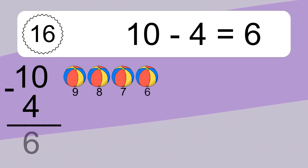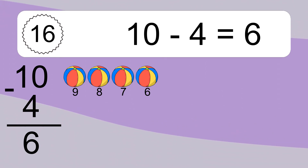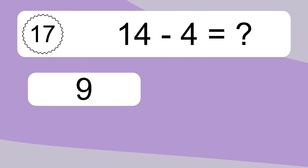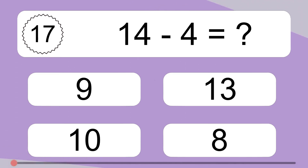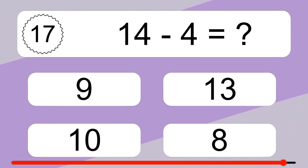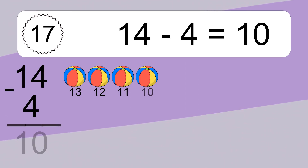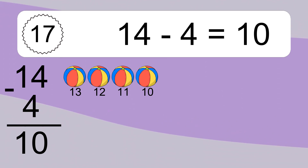10 minus 4 equals what? 10 minus 4 equals 6. Let's count it: 9, 8, 7, 6. 14 minus 4 equals what? 14 minus 4 equals 10. Let's count it: 13, 12, 11, 10.